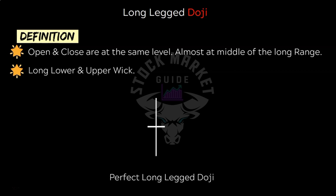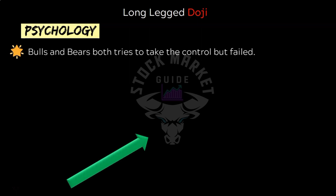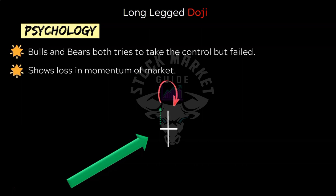The psychology behind long leg doji: suppose the market is trending upward, showing bulls gaining momentum. Then one session a long leg doji forms — on this session bulls tried to take prices higher as shown by the long upper wick, and bears also came in pushing the market lower as indicated by the long lower wick. But the market still closed almost at the same level as open, showing loss of upward momentum. If we get a gap down opening next day or a candlestick closing lower than this doji, we can take the trade depending on other factors.